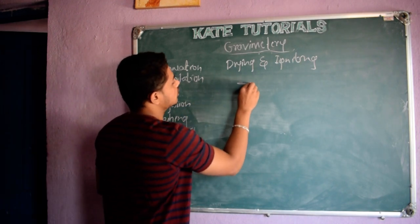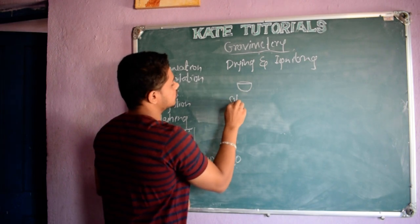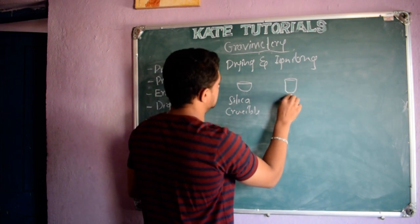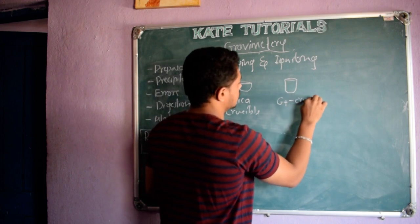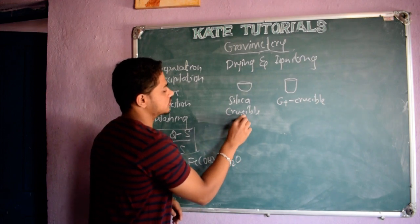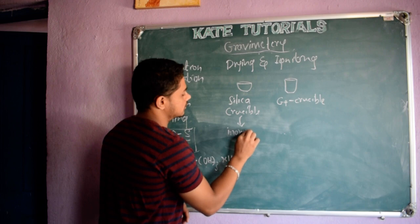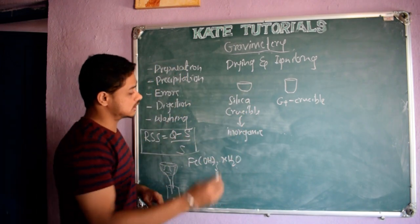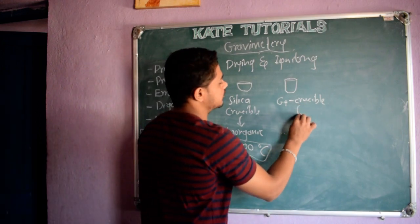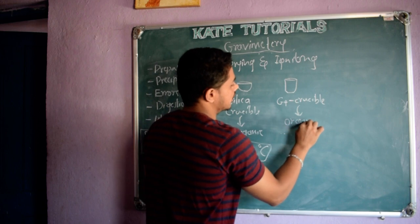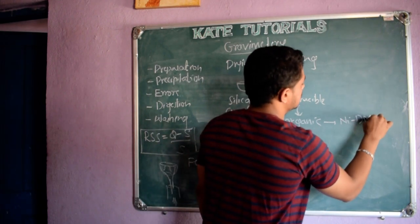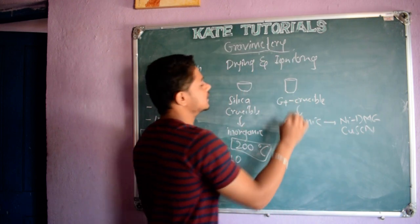There are two kinds of crucibles. One is the silica crucible, used for inorganic compounds, because we supply heat of more than 200 degrees Celsius. The other is the G4 crucible, used for organic compounds like nickel DMG complex or copper cyanide complex, where lower temperatures are needed.